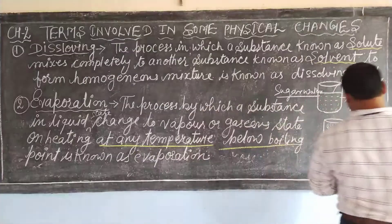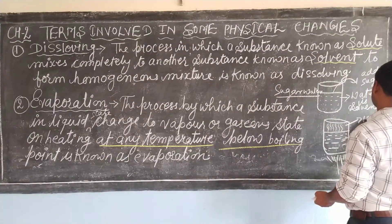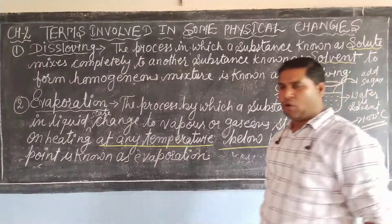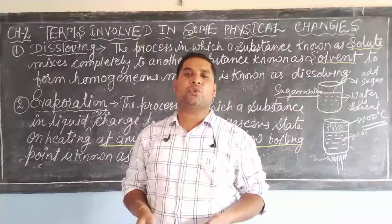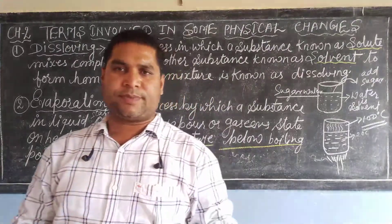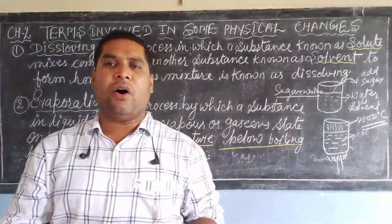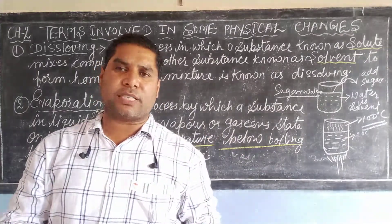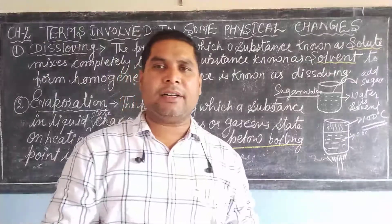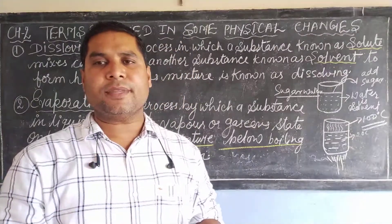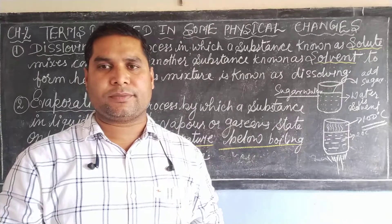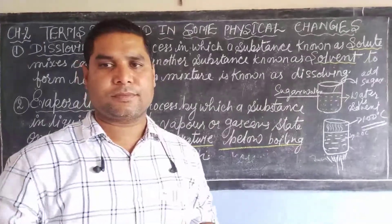Pure water will boil at 100 degrees Celsius, but below the boiling point of water it will change to vapor or gaseous form — that process is known as evaporation. So dear student, please read the topic and learn about what you mean by dissolving and evaporation. Thank you, dear student.